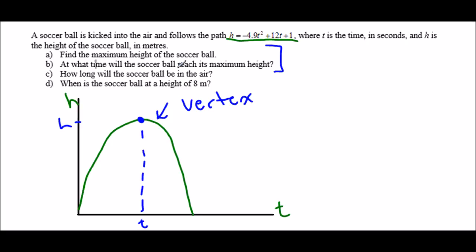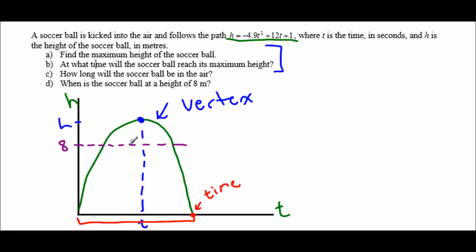Question C says how long will the ball be in the air. When the ball lands on the ground is when it's finished being in the air, so if I can figure out what time it lands, that's how long it was in the air. The final part, D, says when was the soccer ball at a height of eight meters. There should be two answers — one on the way up and one on the way down — but if the maximum height is below eight meters, my answer will be never.